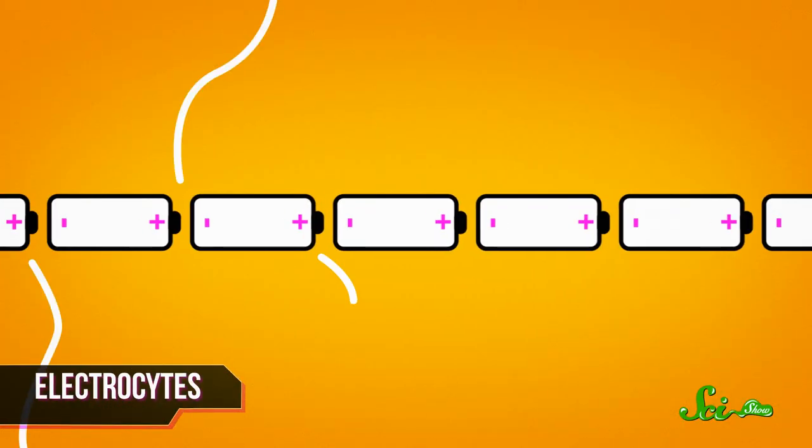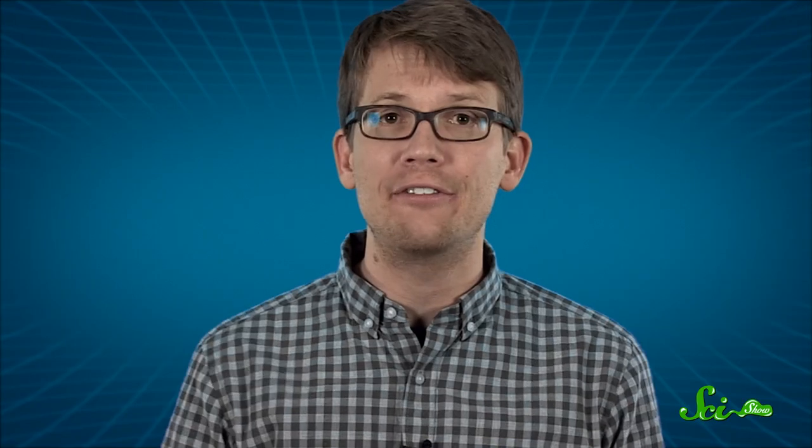Of course, my cells aren't organized in a way that would let me add those voltages together. But these fish have special cells called electrocytes. They're stacked in long chains like the batteries inside a flashlight.